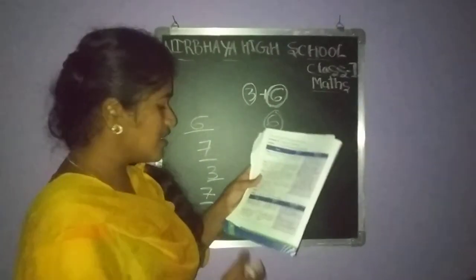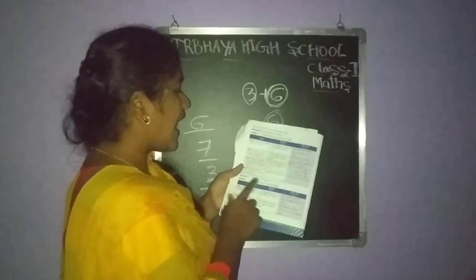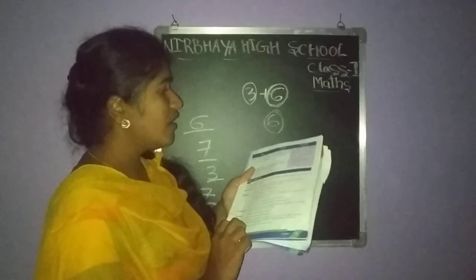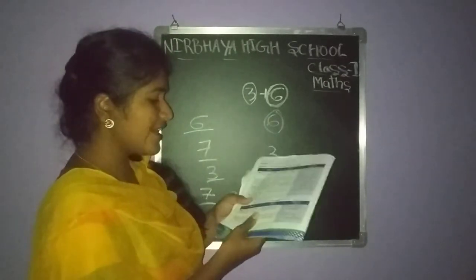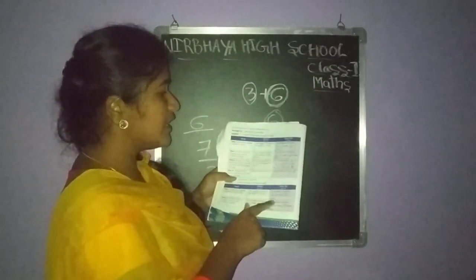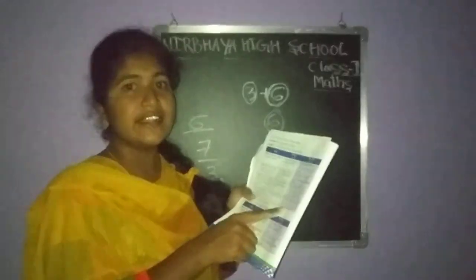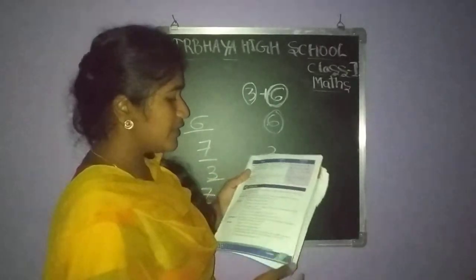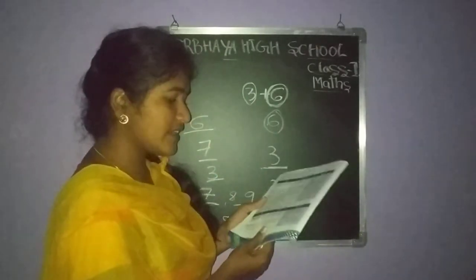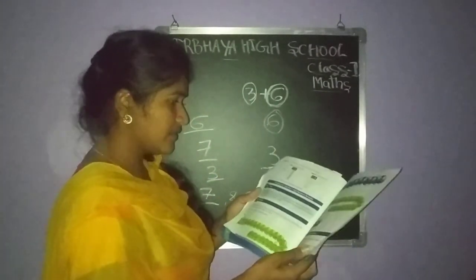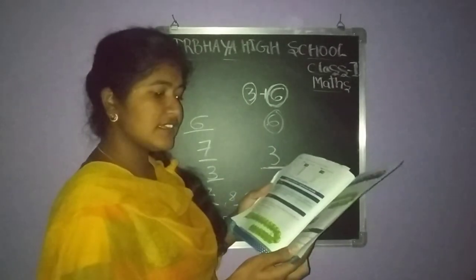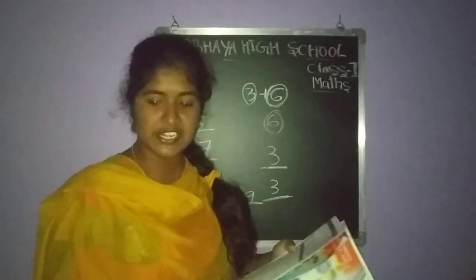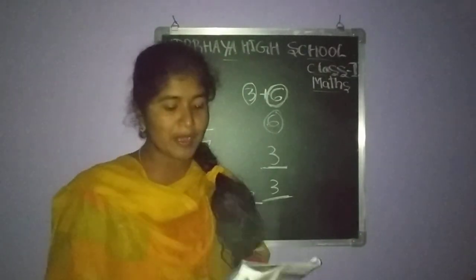Have you understood? Next: add 6 and 7, and 5 plus 9 — you have to do these at home. This is your homework. Do pages 46, 47, and 48 in your textbook. Fill the blanks. Tomorrow I will meet you. Bye.